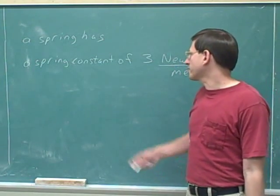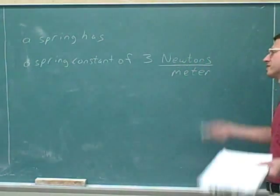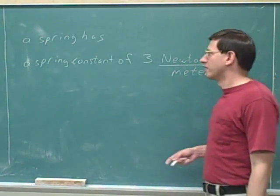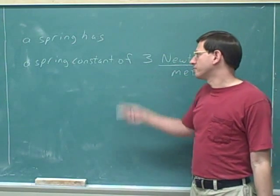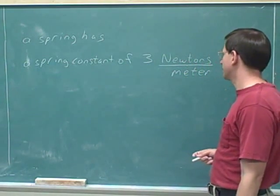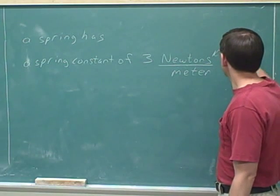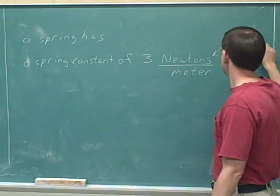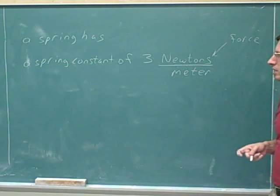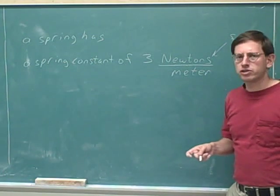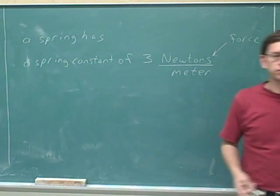So let's say a certain spring has a spring constant of three newtons per meter. Different springs have different spring constants, so this spring has a spring constant of three newtons per meter. Recall that newtons is a measure of force, and meters are a measure of distance. Now, what does this spring constant tell us about this spring?